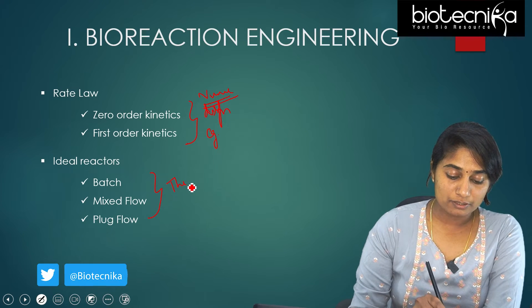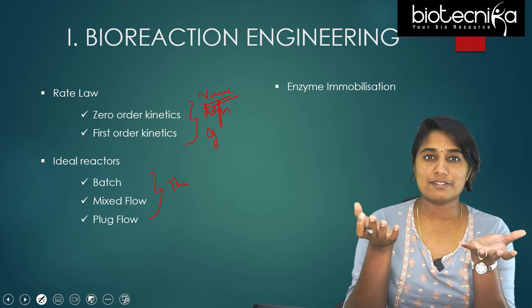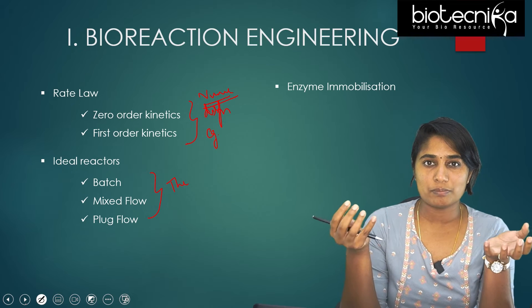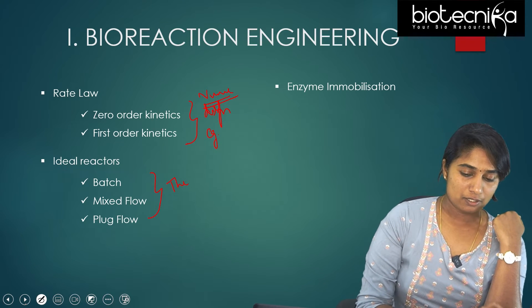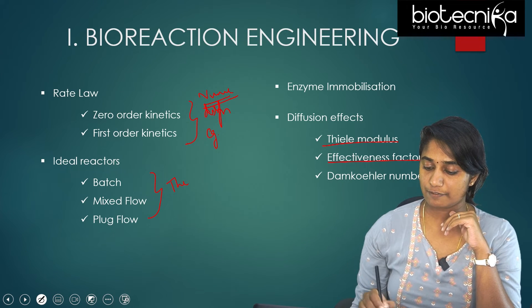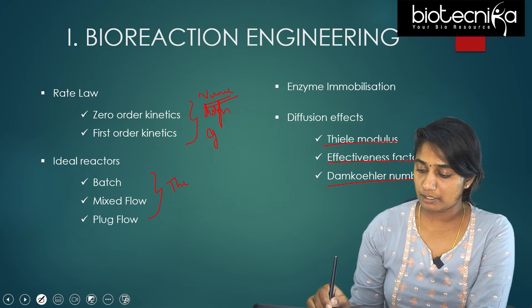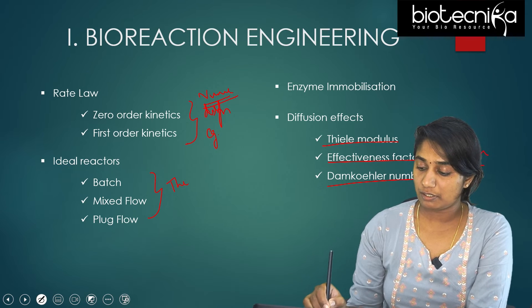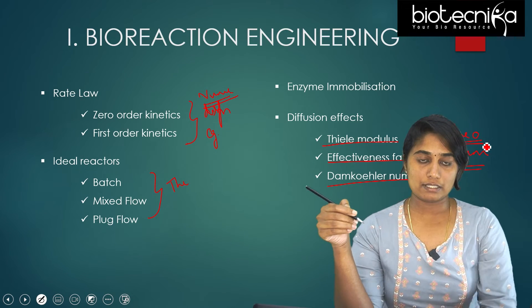Ideal reactors is a theory-based topic. Next is enzyme immobilization — the entrapment of enzyme in a support system. Here we need to know the different methods used for immobilization and what support systems are used in each of these methods. It's basically a theory-based topic. Next, we have diffusion effects: Thiele's modulus, effectiveness factor, and Damköhler number. Multiple questions have been asked from this in previous year papers, and it is a particularly numerical-based topic, though theory-based questions also appear.